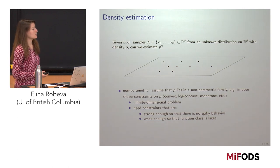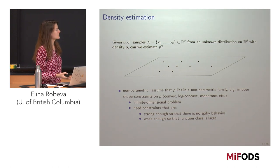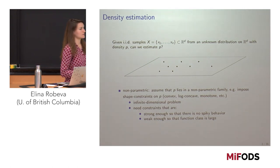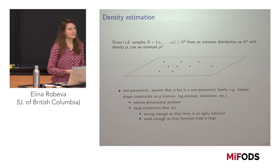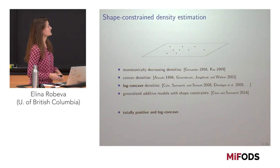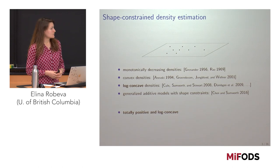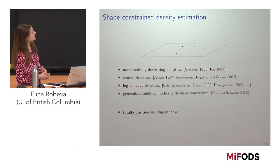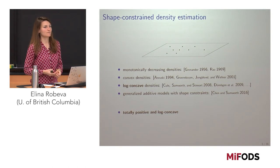This is an infinite dimensional problem. We need to make sure our constraints are strong enough so that there's no spiky behavior — if we didn't impose strong enough constraints, the estimate will just be a sum of Dirac delta functions on the samples. But we also need constraints that are weak enough so that the function class is large and contains the original density. People have studied many different types of density estimation: monotonically decreasing densities, convex densities, log-concave densities, and generalized additive models where you assume the density can be written as a sum of one of the first three.